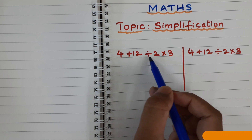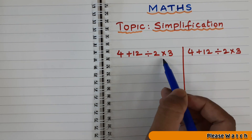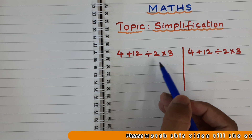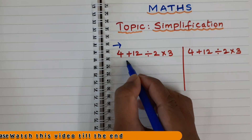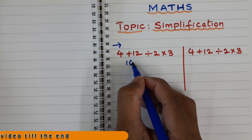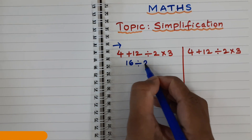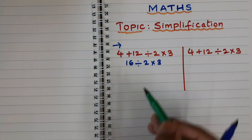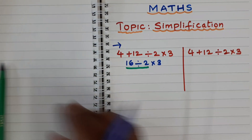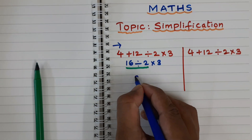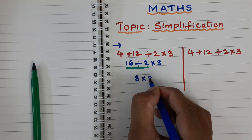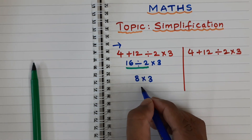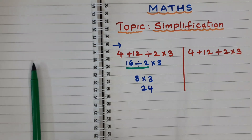So here we have 4 plus 12 divided by 2 into 3. I have one expression here. What I am doing first is solving from the left side: 4 plus 12 is 16. Then 16 divided by 2 is 8. Then 8 into 3 — we get the answer 24. If we calculate from the left side we get answer 24.